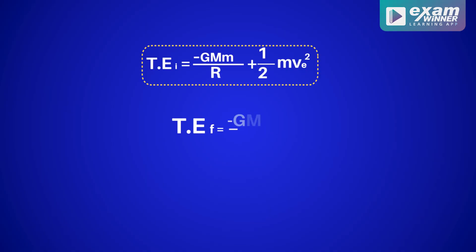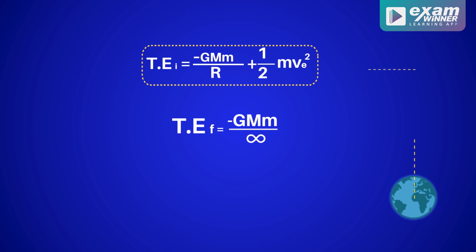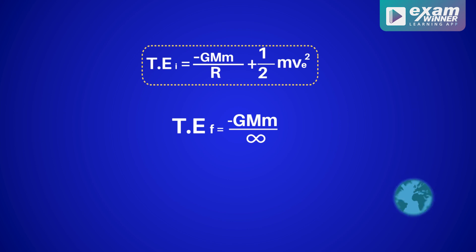What we calculate next is the final total energy at infinity. The final total energy is again potential energy plus kinetic energy. The final potential energy is minus GMm divided by infinity. Since the distance is infinity, the final potential energy is zero.